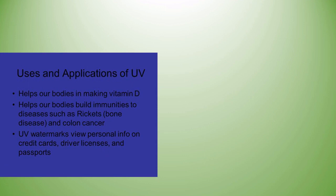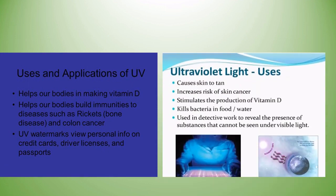Uses of ultraviolet: it helps our bodies make vitamin D and build immunities to diseases such as rickets. UV markers reveal personal information on credit cards, travel documents, and passports. UV stimulates the production of vitamin D and kills bacteria in food and water. It is used in detective work to reveal the presence of substances that cannot be seen under visible light.